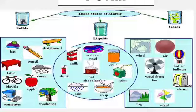Here you have shown that solid are. So, what are the examples of solid? Hat, pencil, skateboard, snow, apple, bicycle, computer, tree, house. These are the examples of solid.